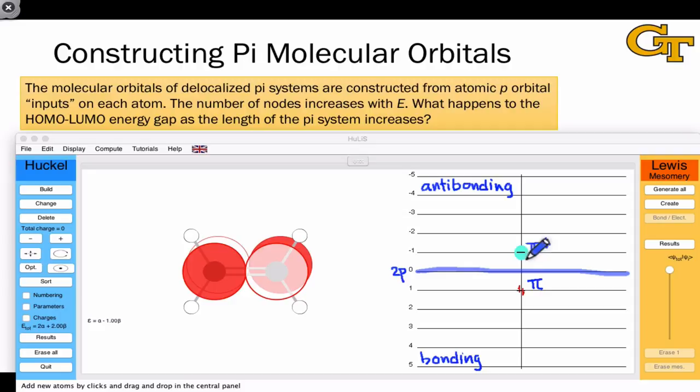Notice here that the gap in energy between the pi and pi star orbitals for ethylene is about two units based on the energy units used here, which rely on a quantity called beta, which we can actually see is the stabilization due to overlap of the p orbitals in ethylene. Keep that two-unit difference in mind, and watch what happens as we add more atoms to the conjugated pi system. Let's do that now.